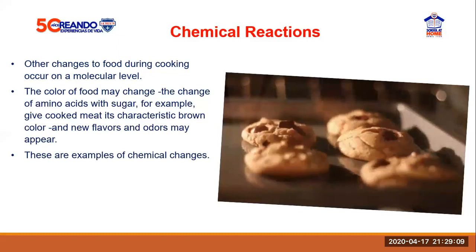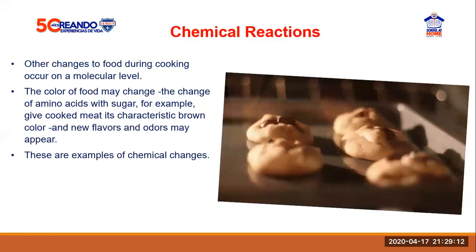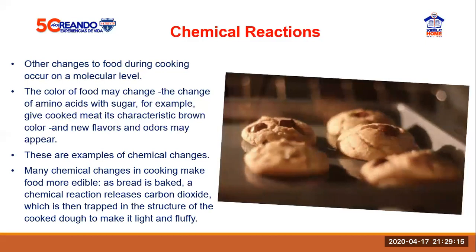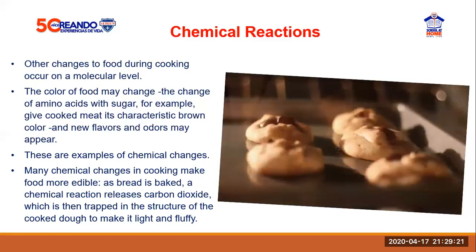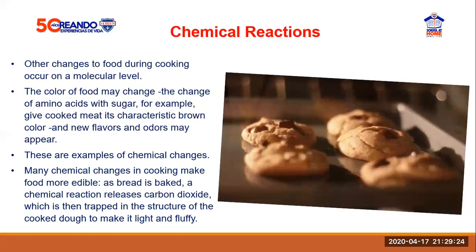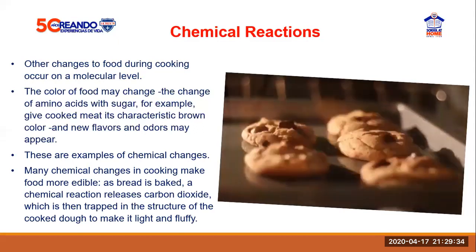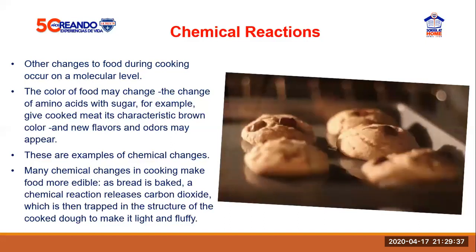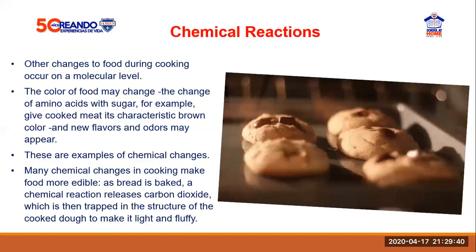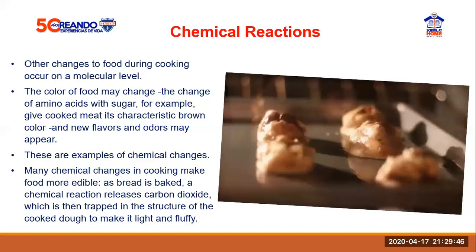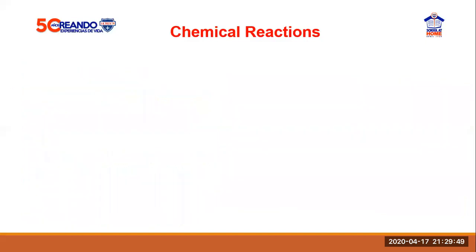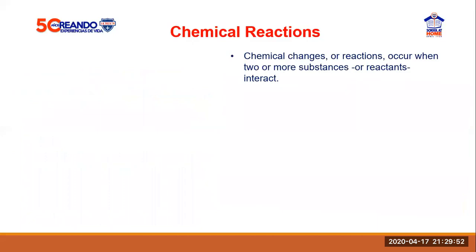These are examples of chemical changes. Many chemical changes in cooking make food more edible. As bread is baked — or these delicious cookies — a chemical reaction releases carbon dioxide, which is then trapped in the structure of the cooked dough to make it light and fluffy. The fluffiness comes from the trapped carbon dioxide in the particles of dough.